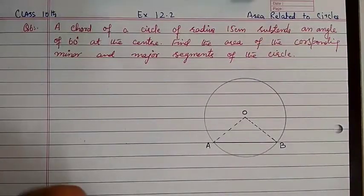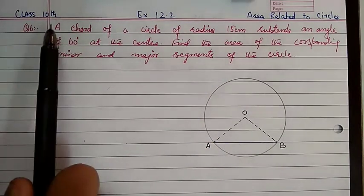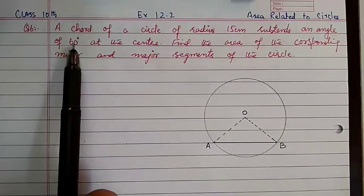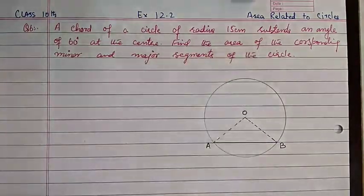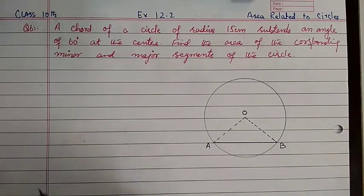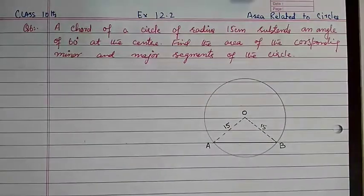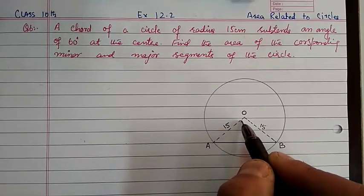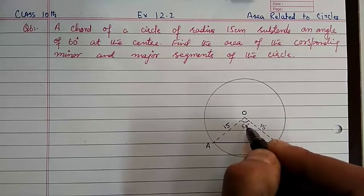Welcome students. This video covers question number 6, exercise 12.2 — Area Related to Circles. A chord of a circle of radius 15 centimeters subtends an angle of 60 degrees at the center. A circle is drawn with radius 15 cm, with OA and OB as radii. The chord AB subtends an angle of 60 degrees at the center O.